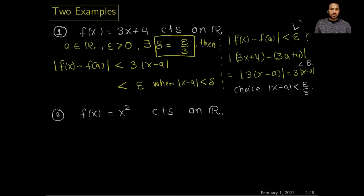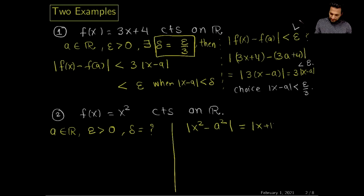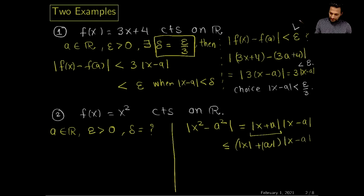Now let's discuss the continuity of the second function, f(x) = x². Again, I need to do the scratch work. I choose a from the real numbers and select epsilon, and my goal is to find a delta so that |x² - a²| < ε. This quantity can be written as |x + a||x - a|, which by the triangle inequality becomes (|x| + |a|)|x - a|.